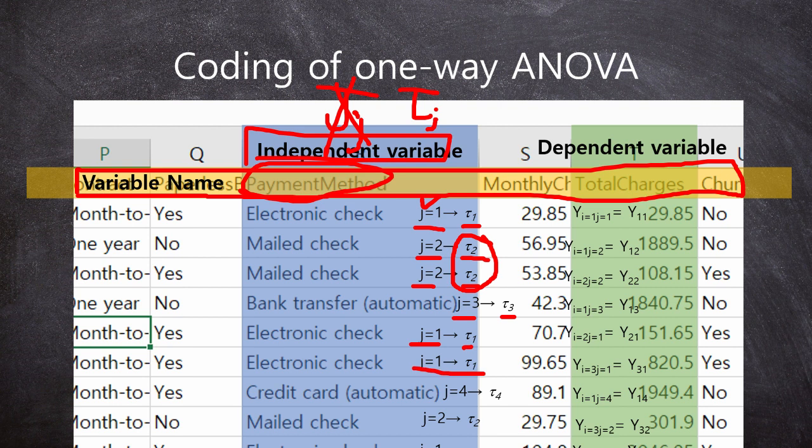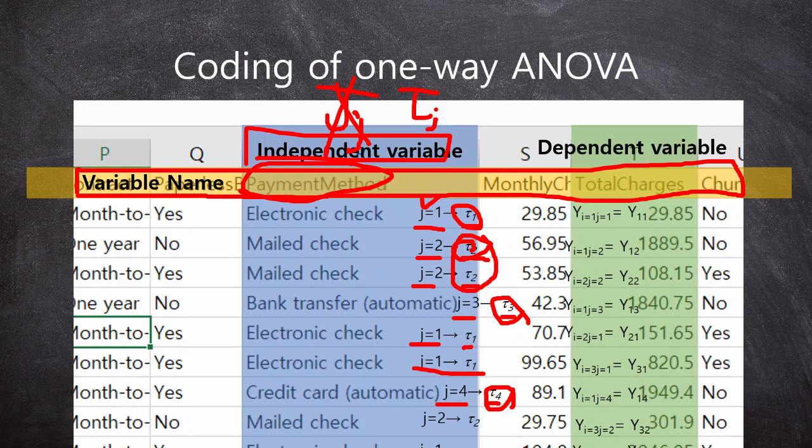Credit card is j=4. So, tau_4. Likewise, all levels, all groups of independent variable could be described as tau_1, tau_2, tau_3, tau_4. Like this. Okay? So, any number or any group of independent variable could be described as tau_j.